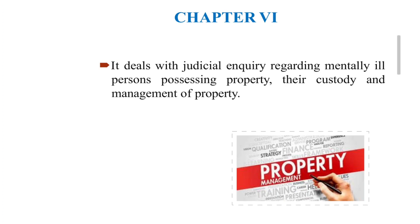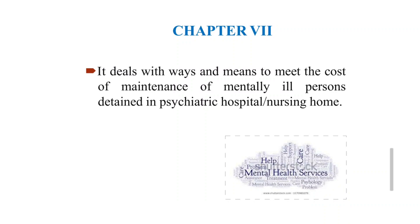Under chapter 6, if a mentally ill person possesses property, the legal proceedings for handling that property are addressed — including who acts as legal guardian or custodian to manage it. Everything about how the property of a mentally ill person is to be handled is clearly explained in this chapter. If there are no relatives or guardian, the court itself will appoint a legal guardian for the patient.